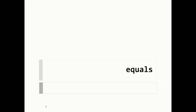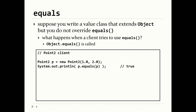Good afternoon everybody. Today's lecture is on implementing the method called equals. So we've got several classes so far: a Point class, a Counter class, and a Stopwatch class. Currently we have some constructors and simple methods in these classes, but we haven't implemented equals yet for our classes.